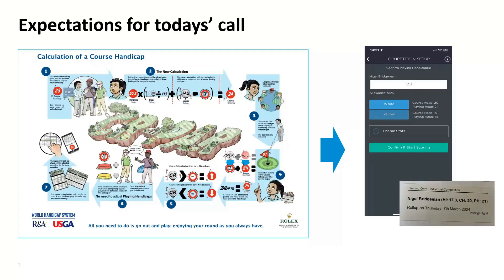Expectations for today's call: the slide on the left comes from the R&A — their attempt at a simplified explanation of the changes. That's not what we're covering. Instead, our focus is not on how the calculation is done, but basically how you can look up your handicap. You shouldn't have to calculate a course handicap or playing handicap. We'll go through demos using the app or by printing a label.